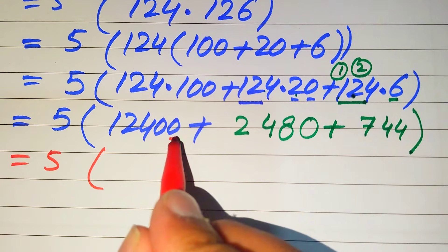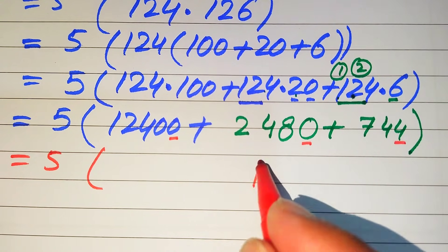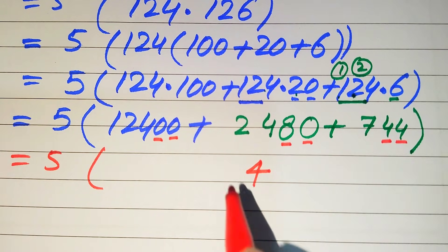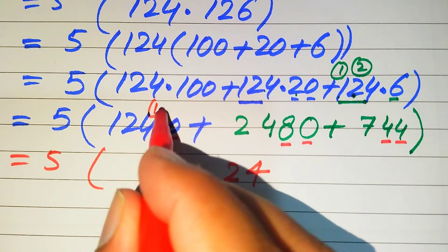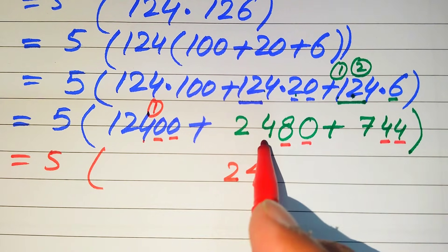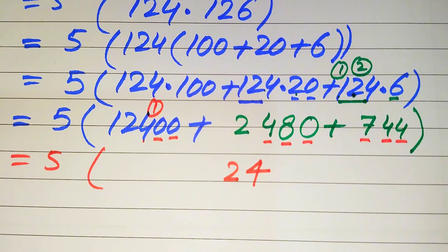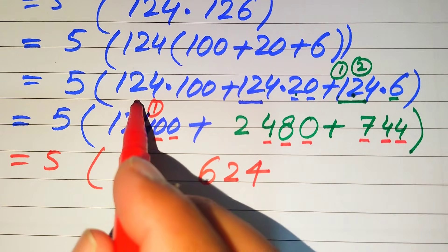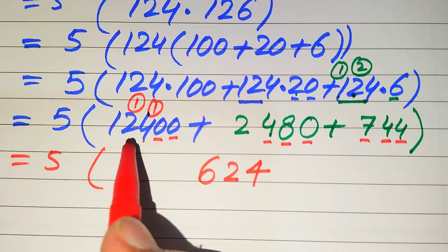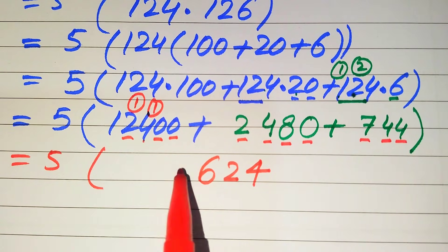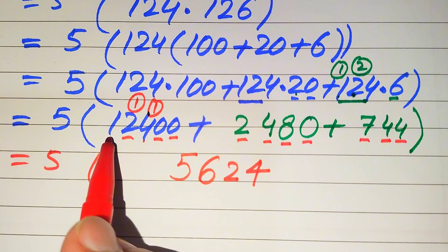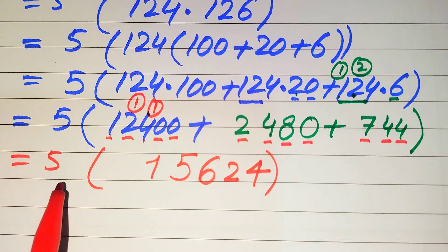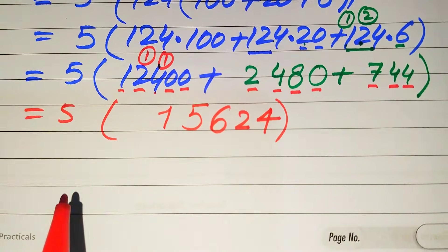Now we sum up all the partial products: 12,400 plus 2,480 plus 744. Adding column by column: 0 plus 0 plus 4 is 4; 0 plus 8 plus 4 is 12, write 2 carry 1; 4 plus 4 plus 7 is 15, plus carry 1 is 16, write 6 carry 1; 2 plus 2 plus 2 is 6, wait — that gives 5 with carry; and finally 1. The result is 15,624.